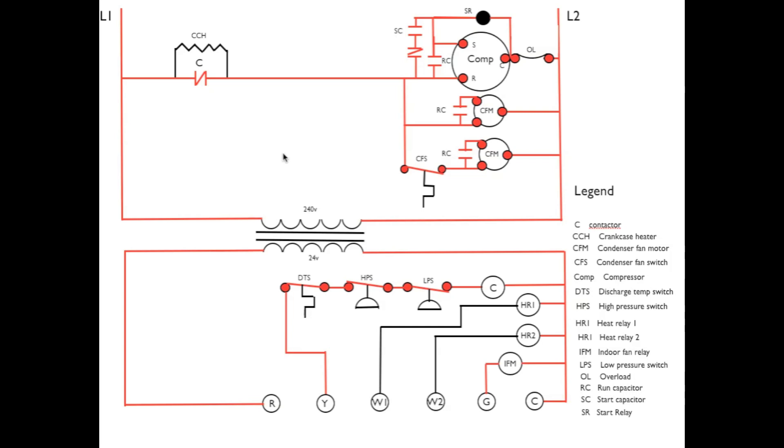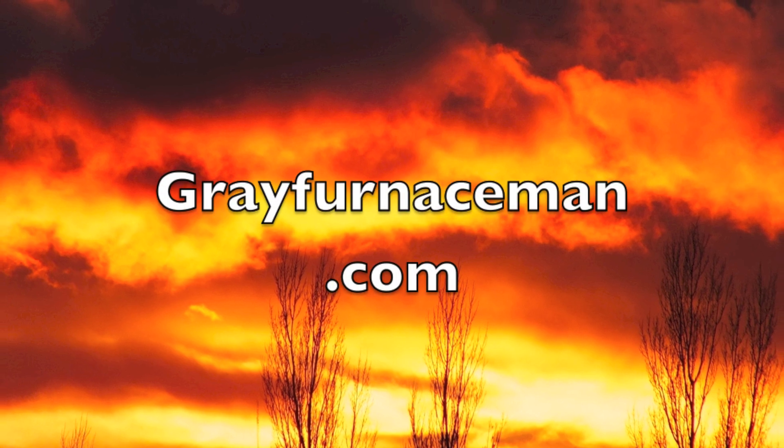Okay, the last part of this sequencing is we're going to close CFS. So, power will go through C, down through CFS, which is now closed, and it will energize the second condenser fan motor. And that's the cycling of this air conditioner. Thank you.